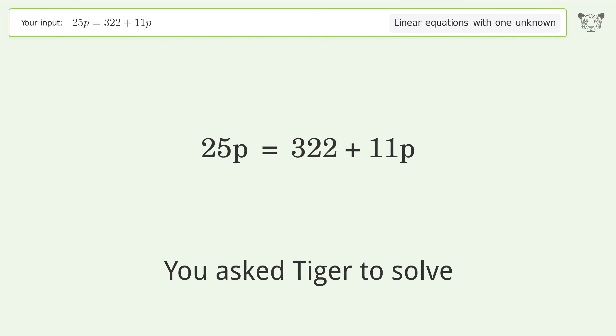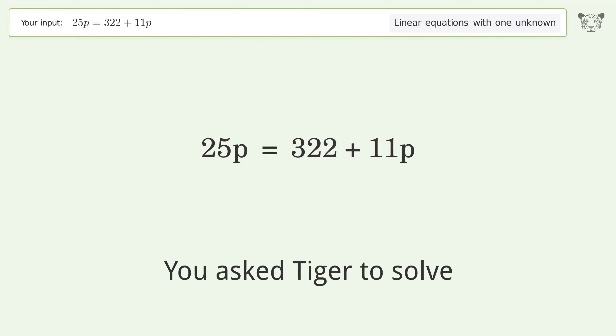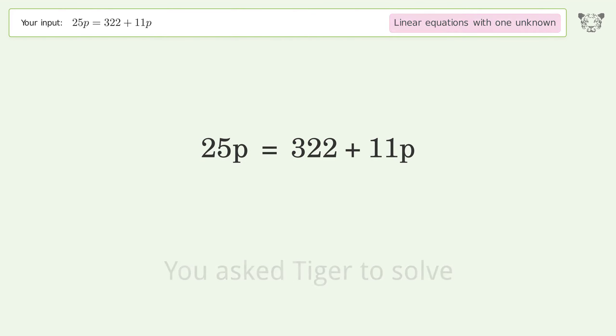Tiger Algebra solves a linear equation with one unknown: 25p = 322 + 11p. The final result is p equals 23.